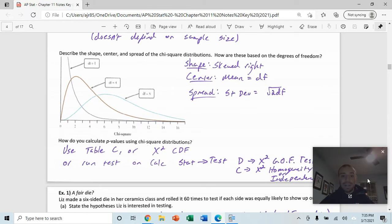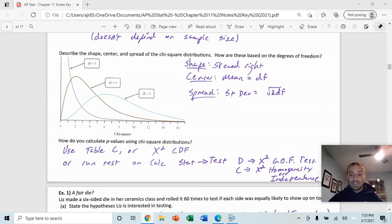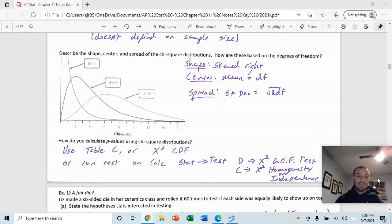Shown here is the chi-squared distribution. We've seen several distributions. We know that both the normal distribution is bell-shaped and symmetric, and the t-distribution is bell-shaped and symmetric. The chi-squared distribution is skewed right. The mean of the chi-squared distribution is equal to the degrees of freedom, and the standard deviation is equal to the square root of 2 times the degrees of freedom.